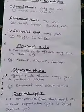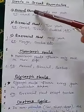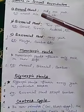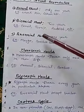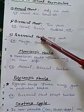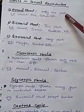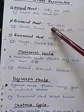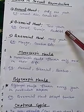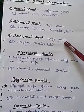On the basis of life span, there are three types of plants. The first is annual plant, second is biennial plant, and third is perennial plant. The life span of a plant that is only one year is called annual plant. Two years is called biennial plant, and many years is called perennial plant.